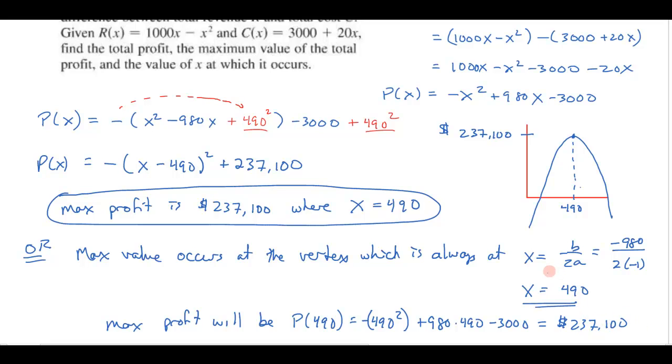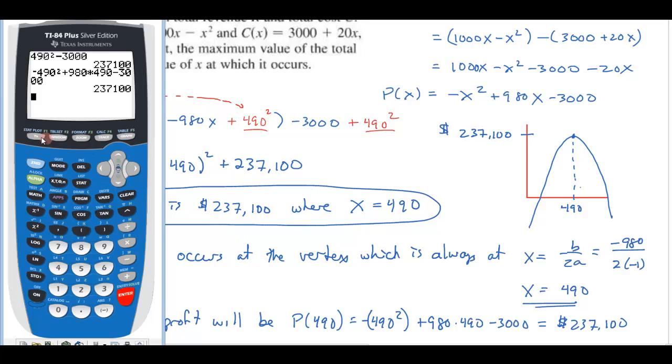Now, the final way that you could show this and locate the maximum is to just graph it. Once I have the profit function, I could have just gone to my y equals here and graphed it, which is -x² + 980x - 3000.